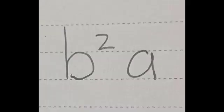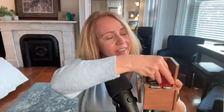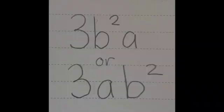a cubed. a squared b — two of those, that's 2a squared b. b squared a. b squared a. And b squared a — that's 3b squared a.